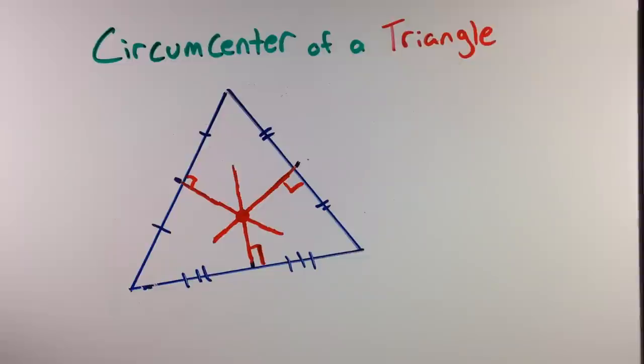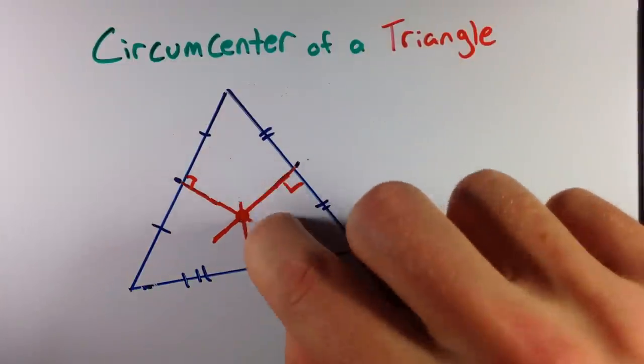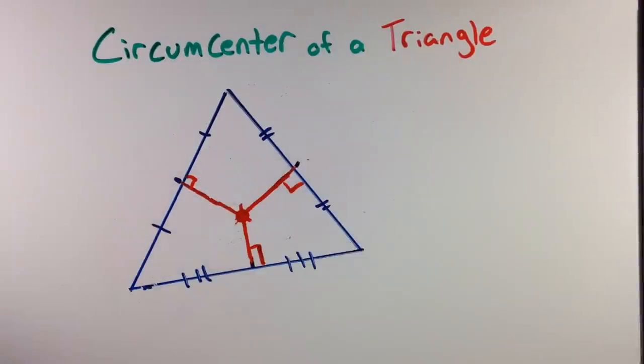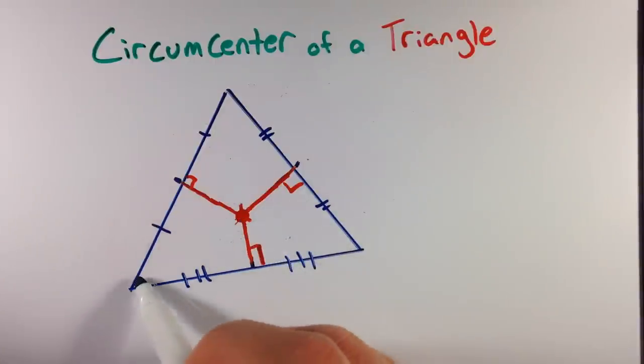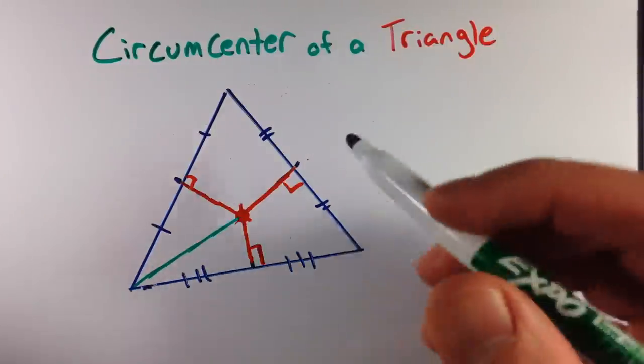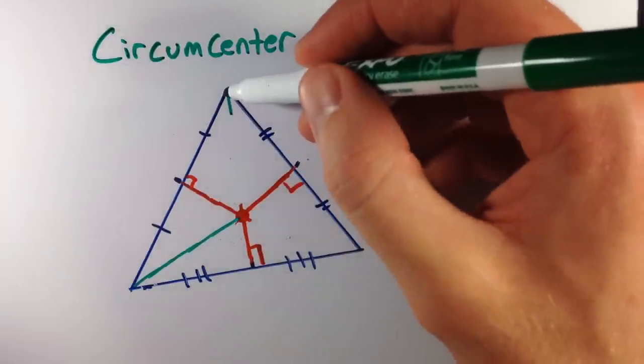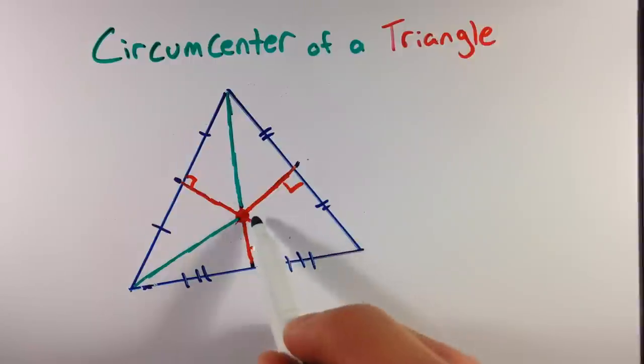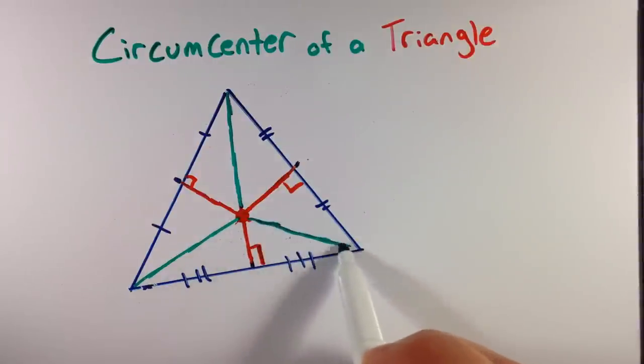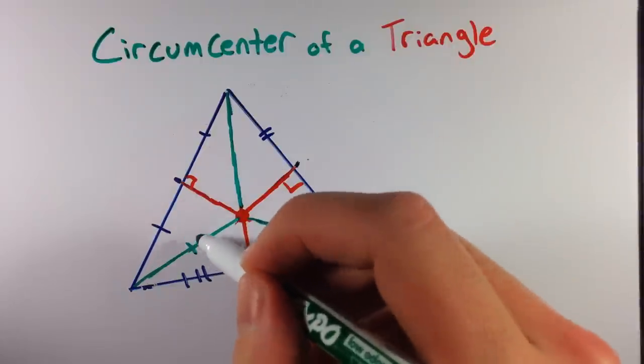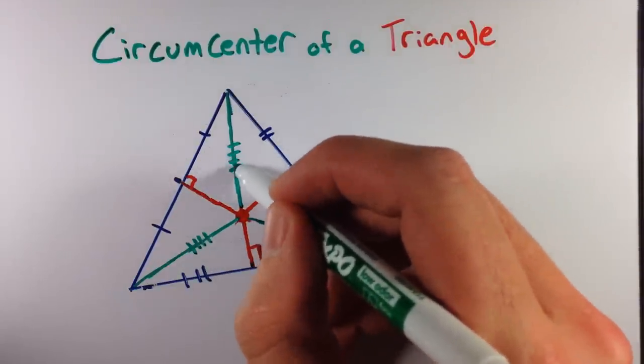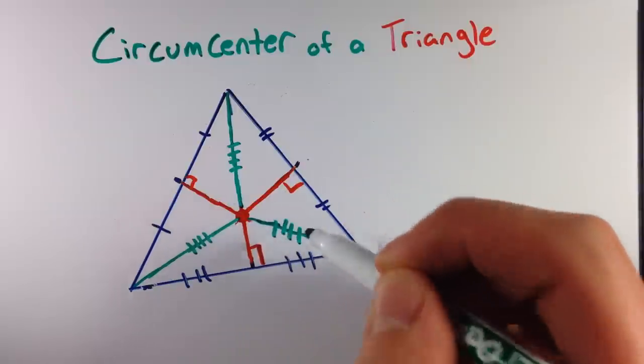That circumcenter has some unique qualities to it. That circumcenter right here is equidistant to each vertice of this triangle, meaning it is the same distance away from each vertice. So that circumcenter is exactly the same distance between each vertice of our triangle.